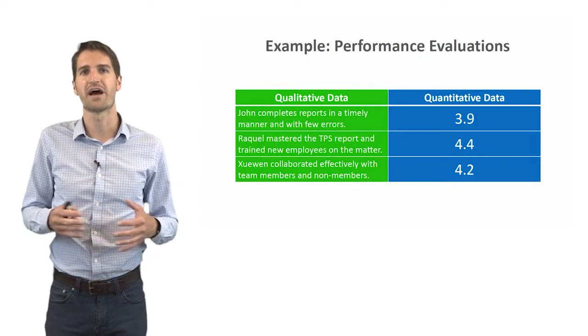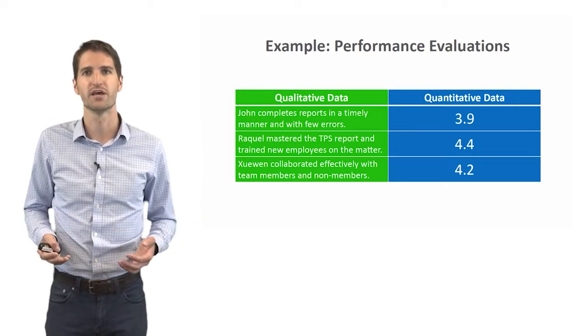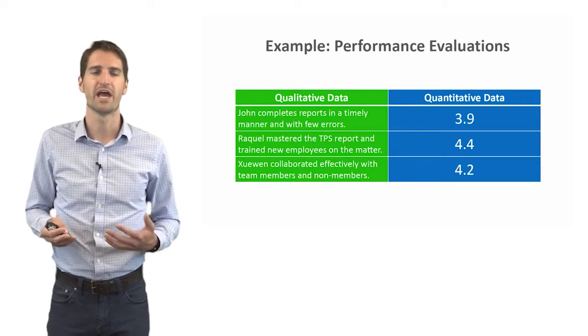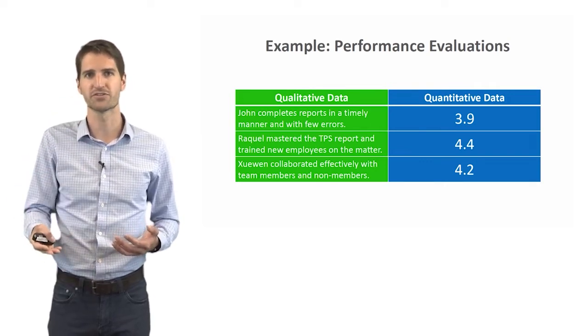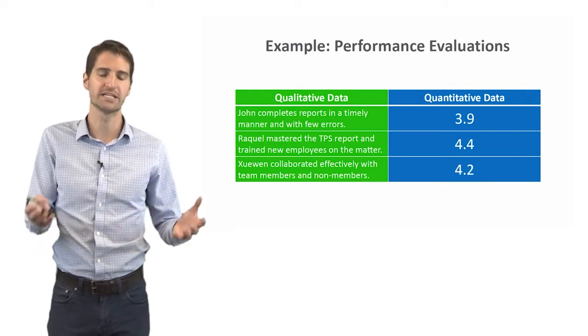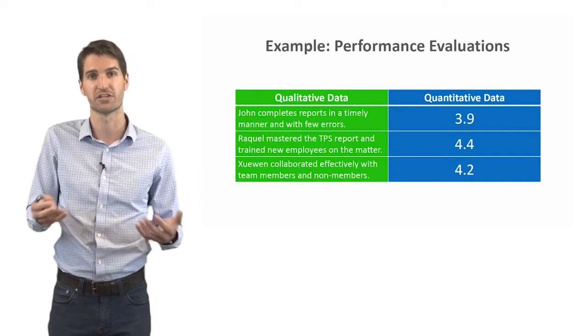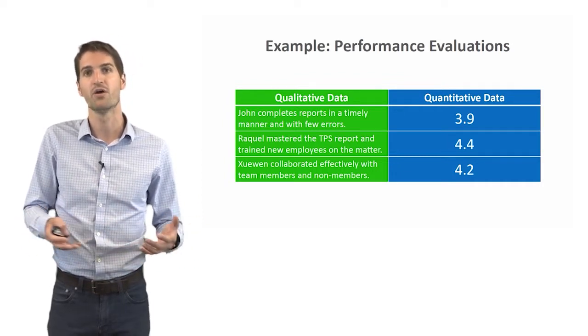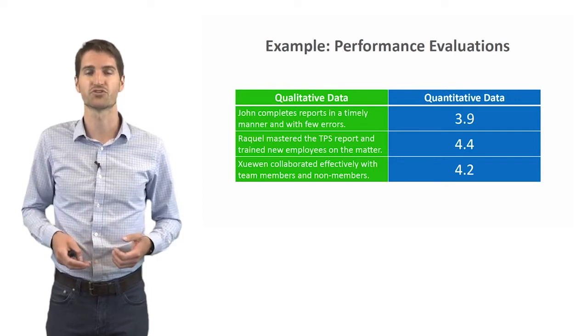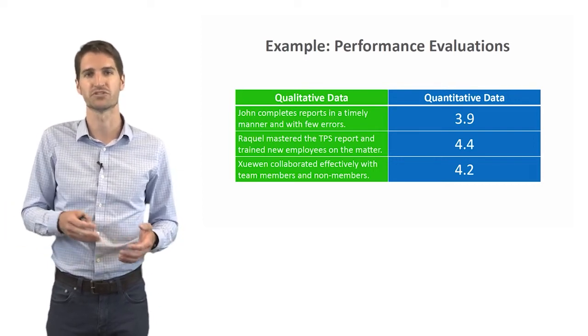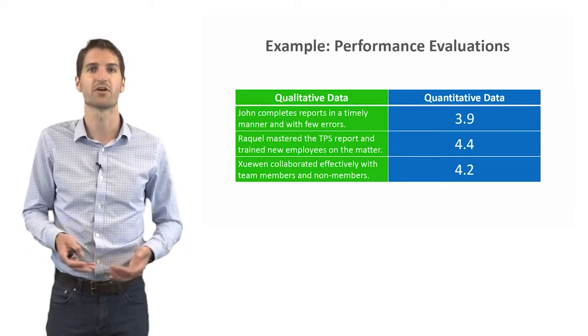So let's look at an example of how we can distinguish between qualitative data and quantitative data, and this time in the context of performance evaluations. So let's imagine that we have a performance evaluation tool, and part of the tool involves raters rating the employees along a number of different performance dimensions or standards, and then the other part is an open-ended section at the end where people fill in the blank and provide information in narrative form about the employees and describe the employees using words what they did or didn't do or how well or how they didn't do something so well during the review period. And so if we look at the first row here, let's assume that this row contains data for the same person. We can see an example of qualitative data would be John completes reports in a timely manner and with few errors.